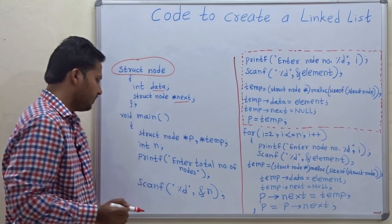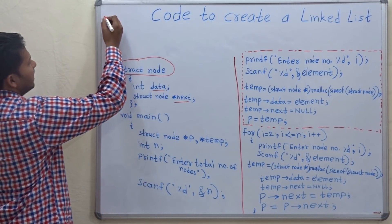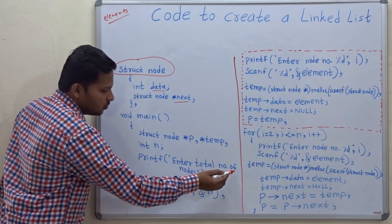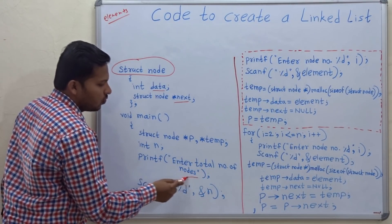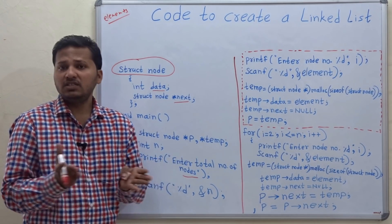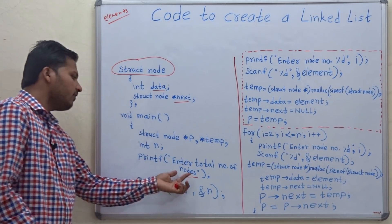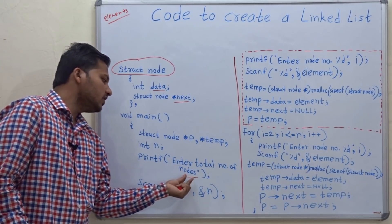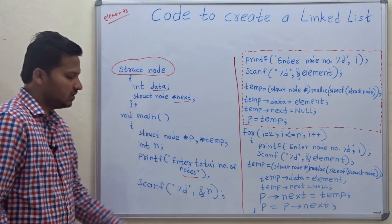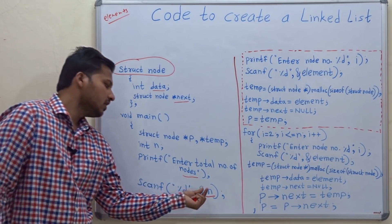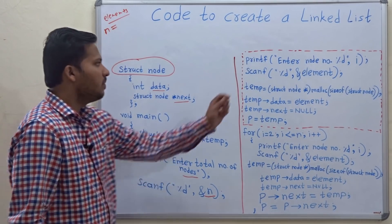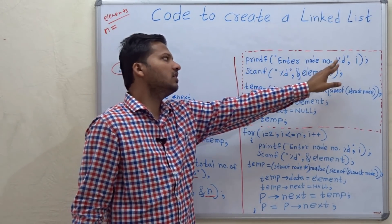As you know, in the linked list elements are taken from the user as input. First you have to ask the user to enter the total number of nodes — meaning how many nodes you need in the linked list. Suppose the user wants to create a list of roll numbers of students in a class, so you ask how many students are in the class. We write 'enter total number of nodes' and use scanf to take that value into the variable n.